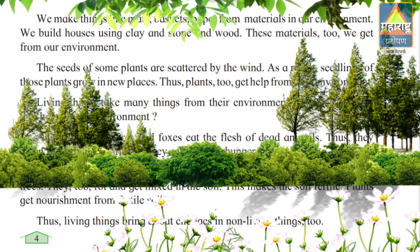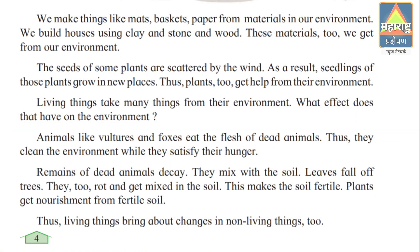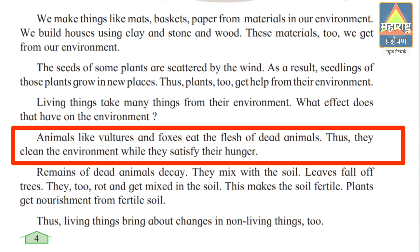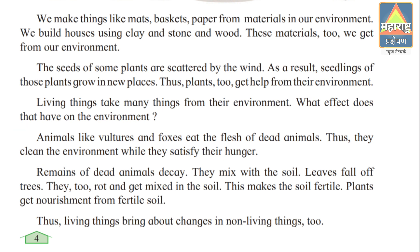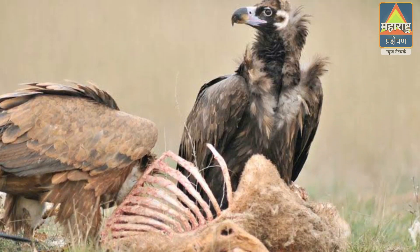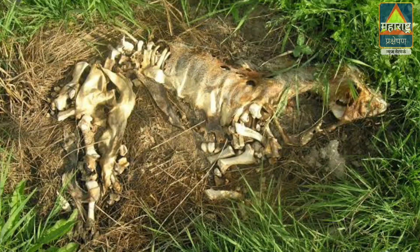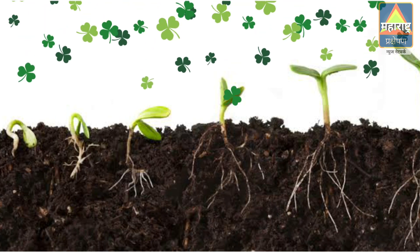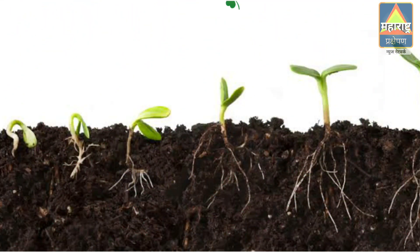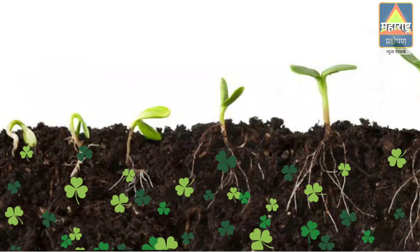Living things take many things from their environment. What effect do they have on the environment? Animals like vultures and foxes eat the flesh of dead animals. Thus they clean the environment while satisfying their hunger. The remains of dead animals decay and mix with the soil.